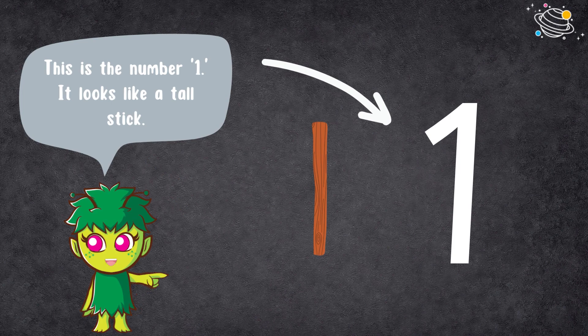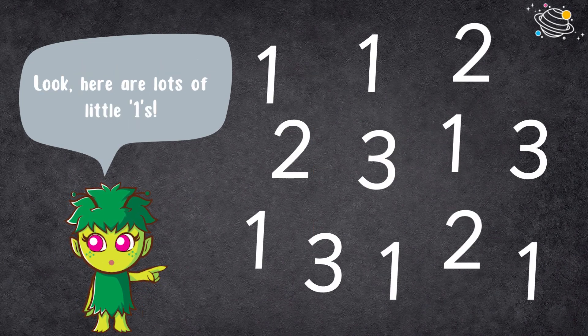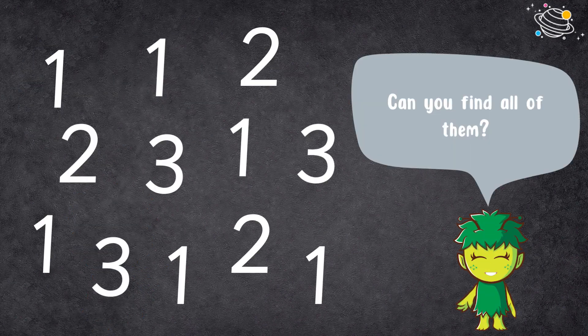This is the number one. It looks like a tall stick. Can you say one? Look, here are lots of little ones. Can you find all of them?